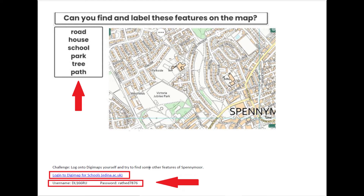For our geography topic we're going to start thinking about maps, and today we're going to find features on our maps. To do this we're going to use a tool called Digimaps. You might have used it before, you might not — don't worry. The first thing you'll need to do is log on to the school's virtual classroom and find this document. At the bottom you'll find a link to the Digimap tool. You'll need to enter the username and password that are also shown at the bottom of the document.